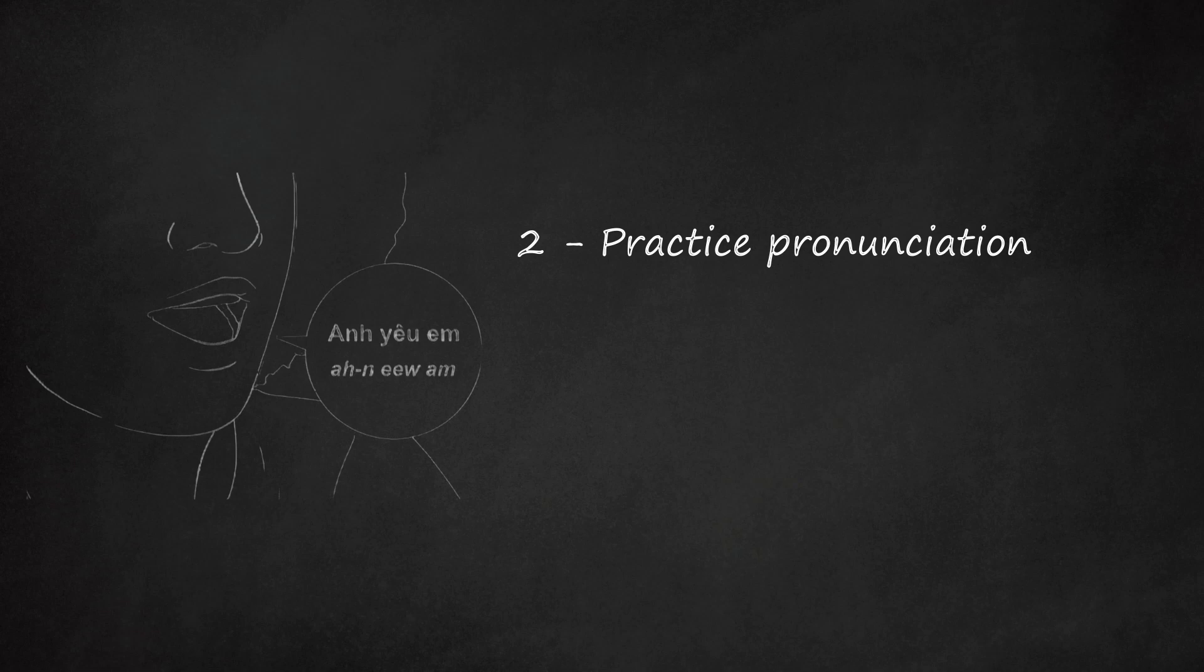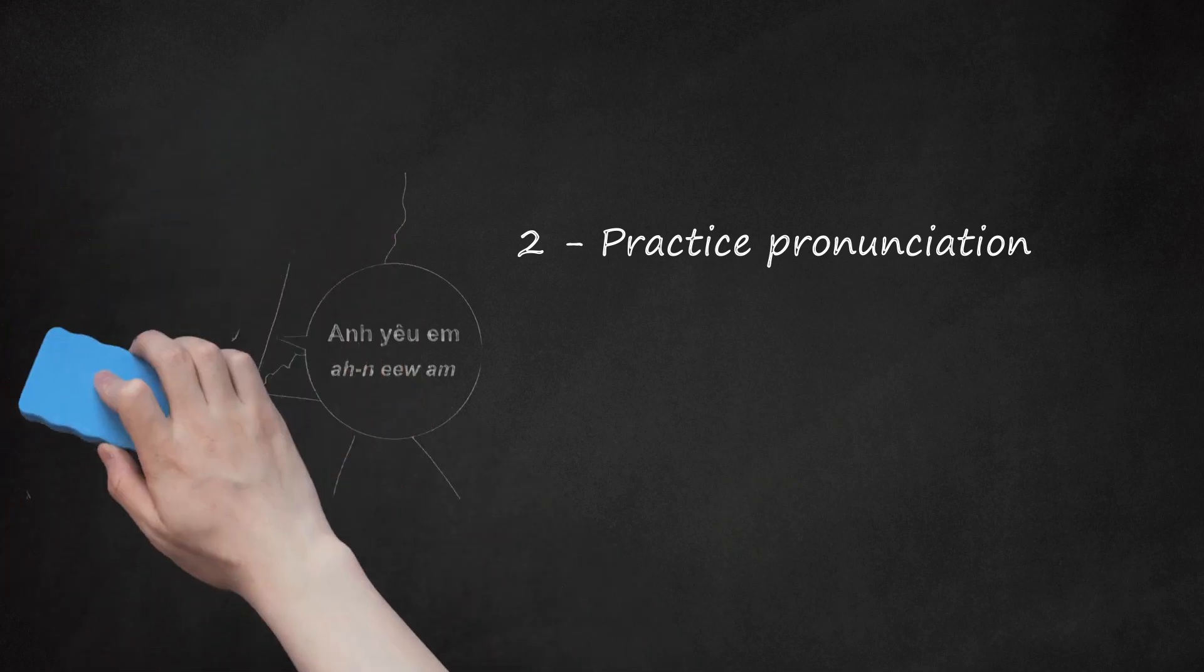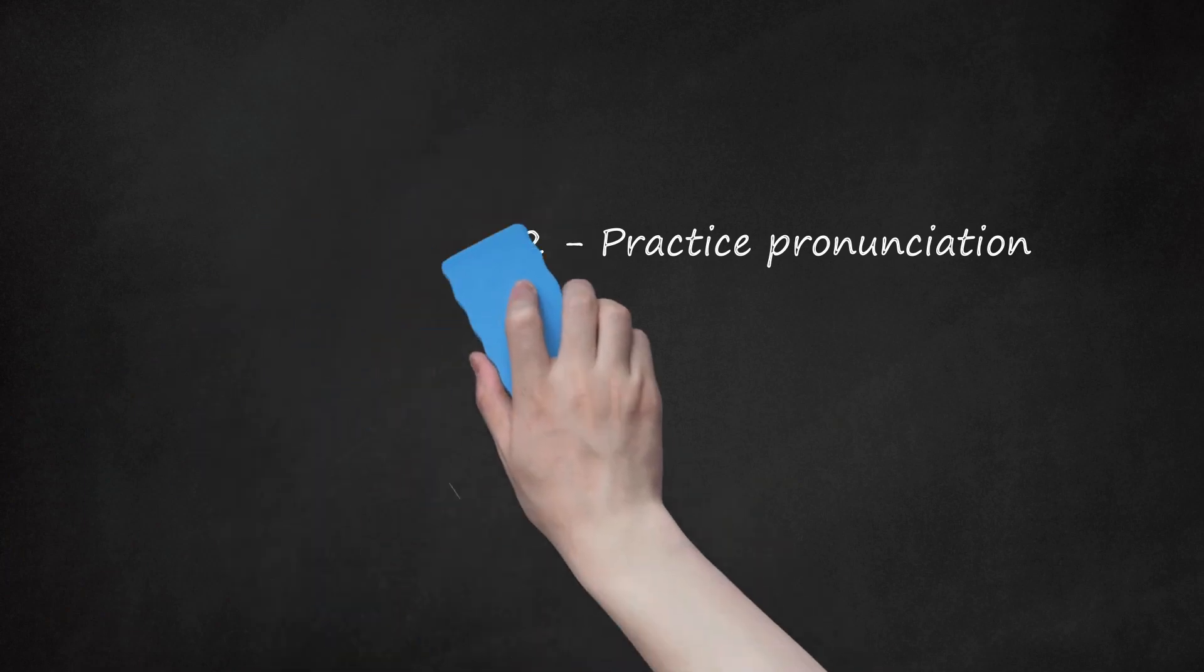To pronounce tôi yêu bạn correctly, pronounce it as 'thoy yêu bahn'. You can find pronunciation guides online and listen to how the words are pronounced. This can help you get a sense if you're saying the phrase correctly.